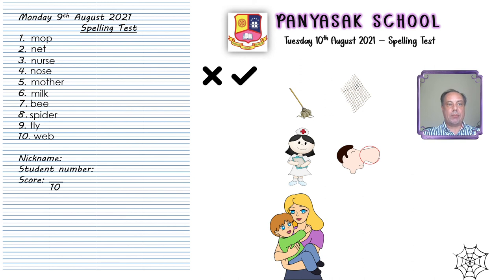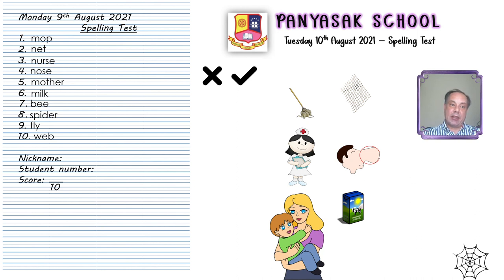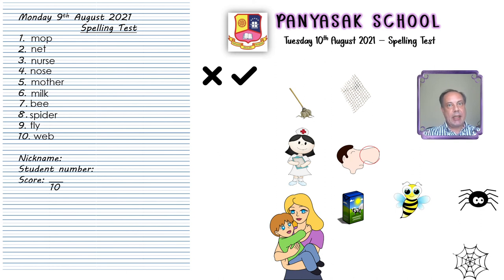Number six was MILK, spelled M-I-L-K. MILK. Number seven was BEE. Number eight was SPIDER, spelled S-P-I-D-E-R. SPIDER.